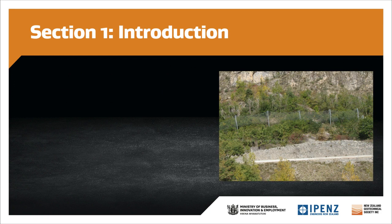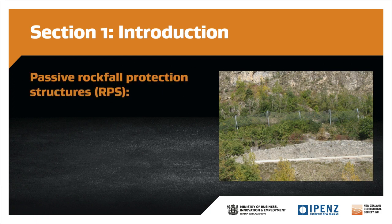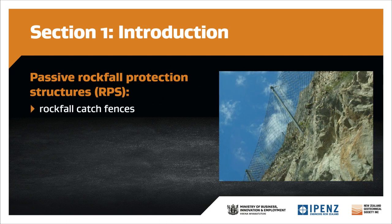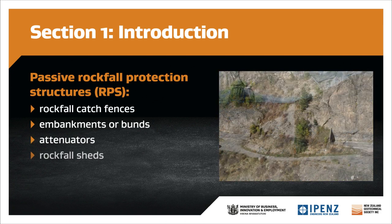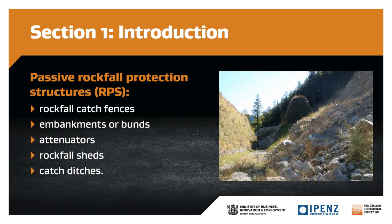In it, we describe passive rockfall protection structures, or RPS. These are engineered structures built to capture, divert, or slow falling rocks. They include rockfall catch fences, embankments or bunds, attenuators, rockfall sheds, and catch ditches. These structures don't prevent rocks from falling, but they can stop or slow their trajectory to protect buildings and infrastructure.